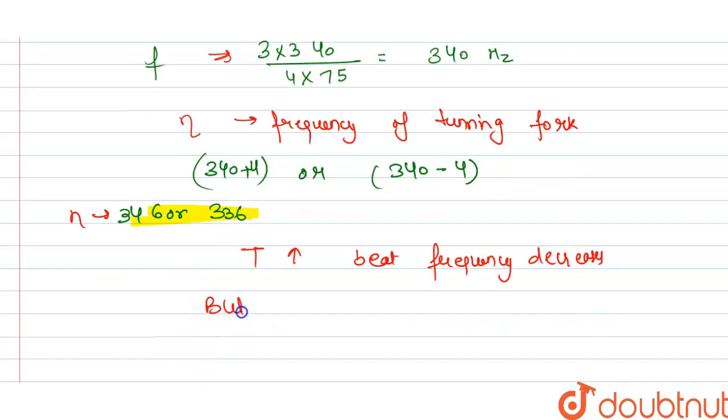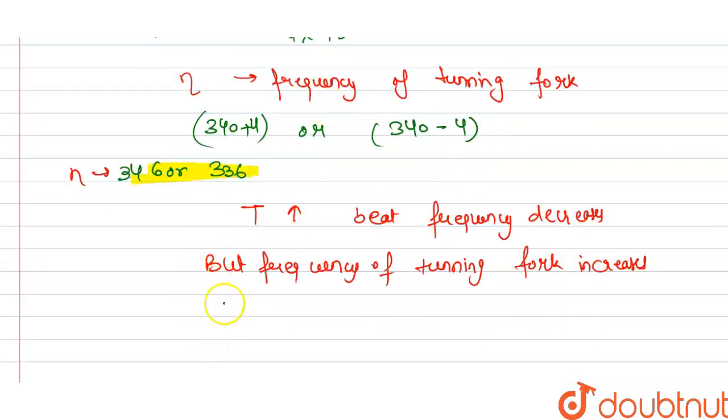But frequency of the tuning fork is also increased. So this must be greater than 340, so we get the frequency of the tuning fork n is equal to: